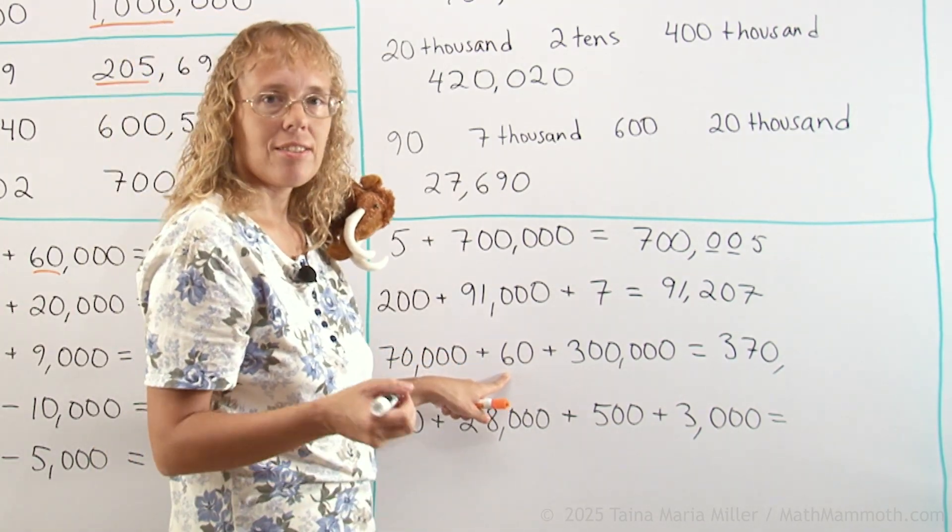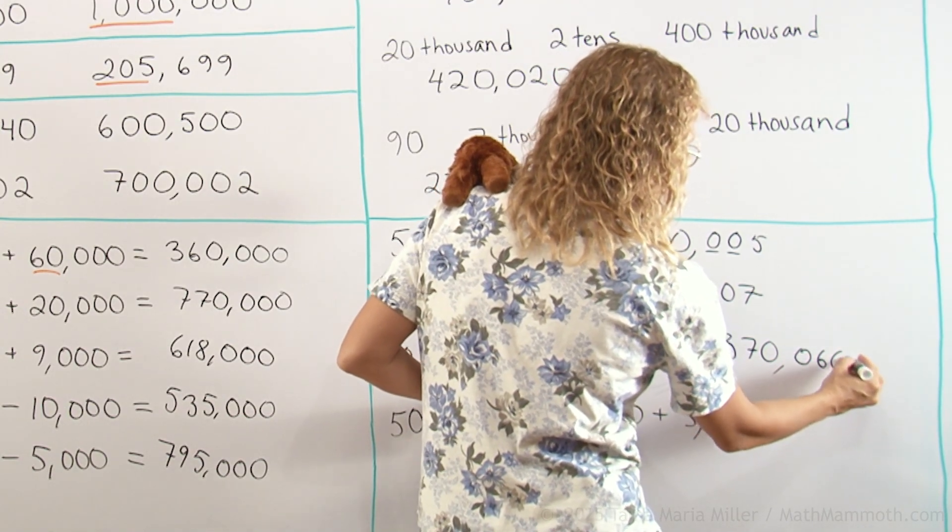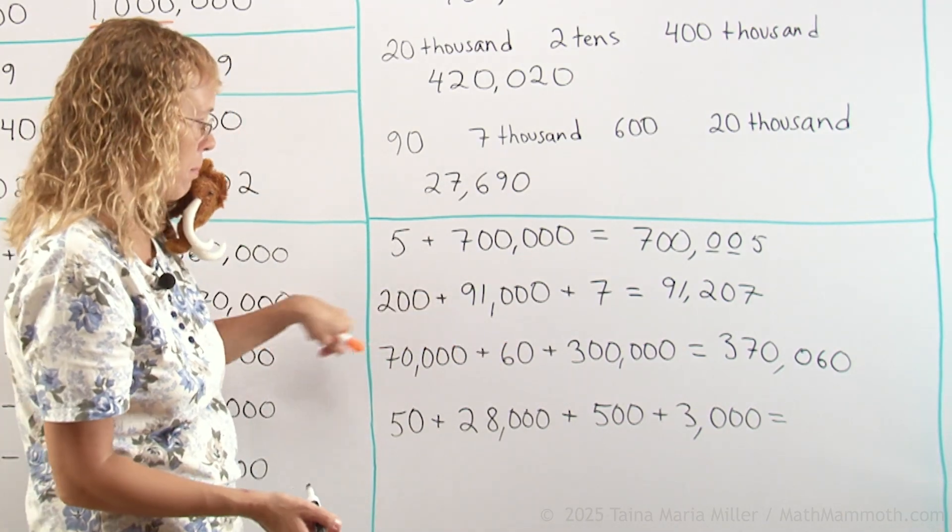And again, I can't just write sixty there. I have to write zero, six, zero. Okay. Because I have to have three digits after the comma. And there's no hundreds in this number.